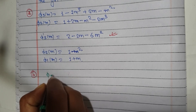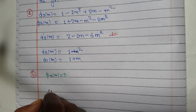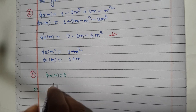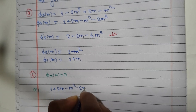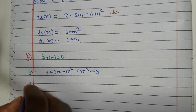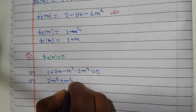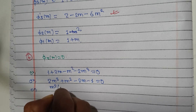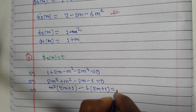Setting this equal to 0, and when 4 is equal to 0, the value of m is equal to 0. So we start: 1 plus 2m minus m squared minus 2m cubed equals 0, which rearranges to 2m cubed plus m squared minus 2m minus 1 equals 0, giving m squared times (2m plus 1) minus 1 equals 0.